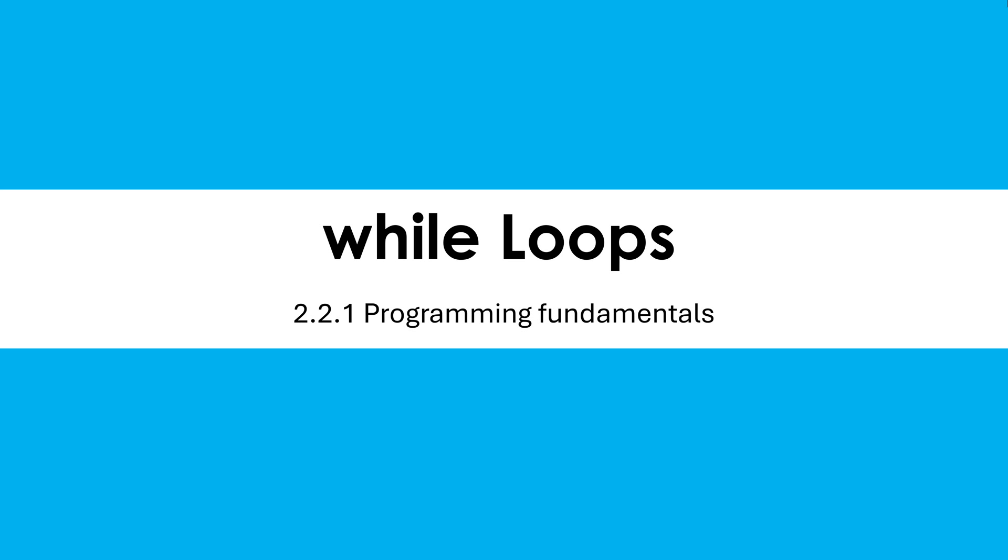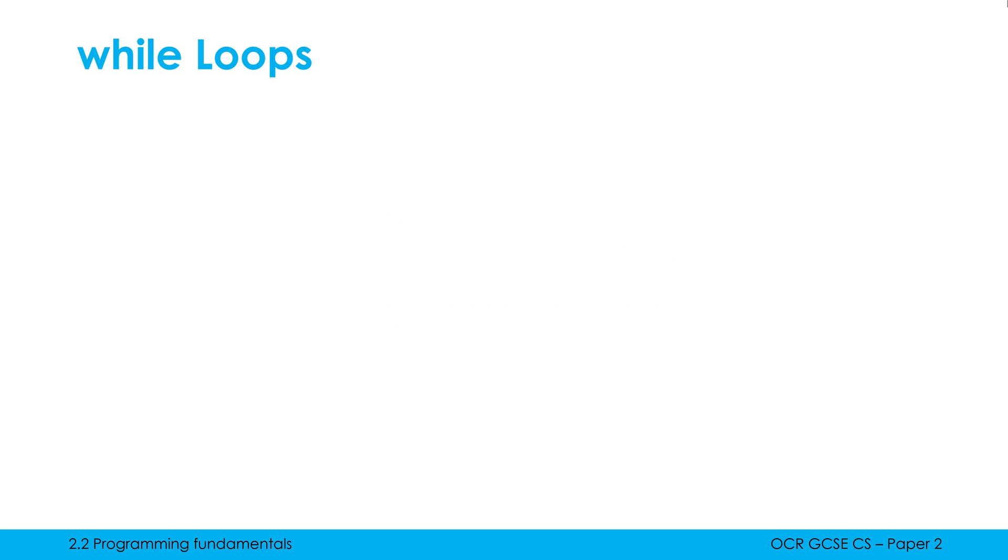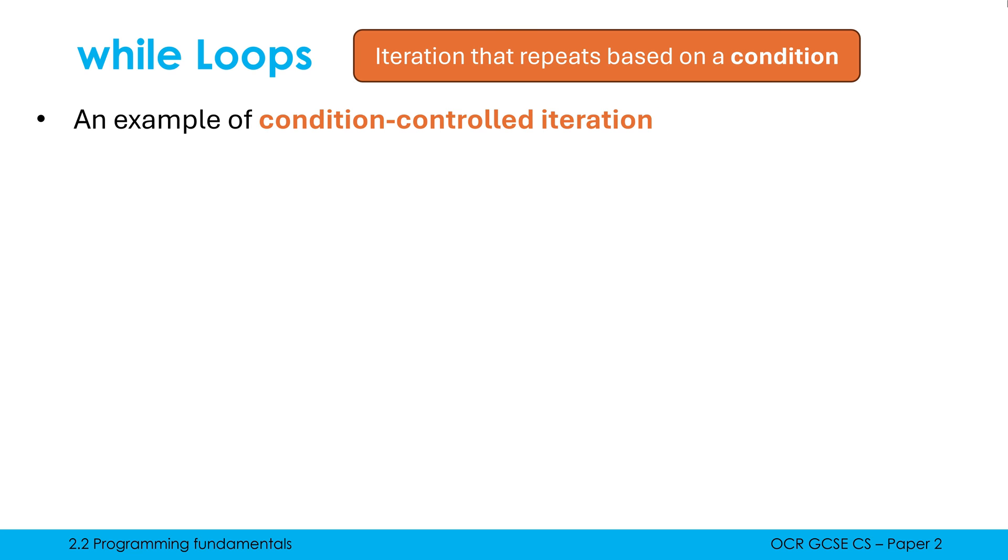All right, let's now have a look at while loops together, which are arguably our most important loop we have in programming. So a while loop is an example of condition controlled iteration. It's not our only example because we also have do until loops we'll look at in the next video. But what is condition controlled iteration?